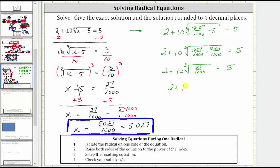Therefore the cube root of 27 over 1000 is equal to 3 over 10. This gives us two plus 10 times 3 over 10 equals five. Remember 10 is equivalent to 10 over one.